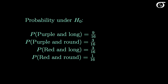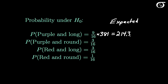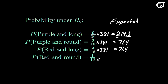Here are our probabilities under the null hypothesis, which we'll use to get our expected counts — what we would expect to see in each category on average if the null hypothesis were true. We get these by multiplying the hypothesized probabilities by our total sample size of 381 plants. That gives us 214.3 for purple flowers and long pollen grains, 71.4 for the next two categories, and 23.8 for the last one.